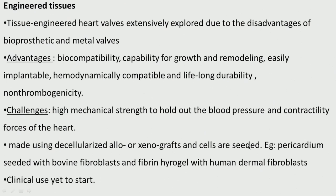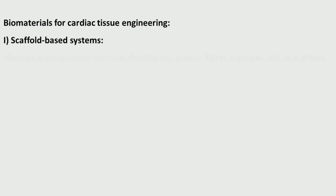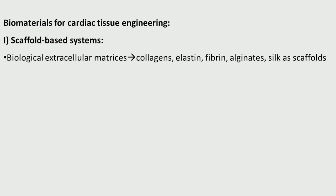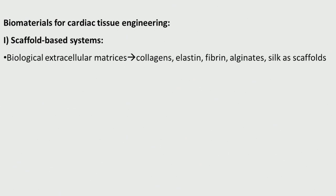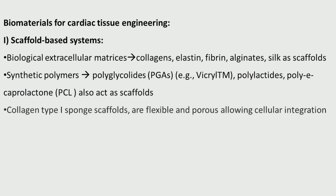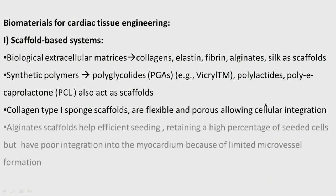Biomaterials for cardiac tissue include scaffold-based materials like collagen, elastin, fibrin, alginates and silk. Synthetic polymers include polyglycolide (PGA), polylactides, polycaprolactone. Collagen type 1 spun scaffolds are flexible and porous, allowing cellular integration. Alginate scaffolds help efficient seeding, retaining a high percentage of seeded cells.